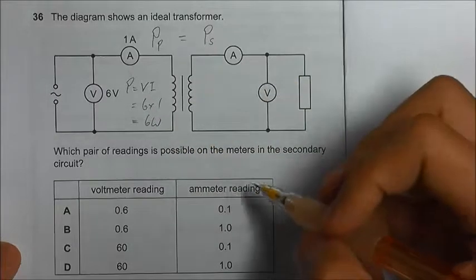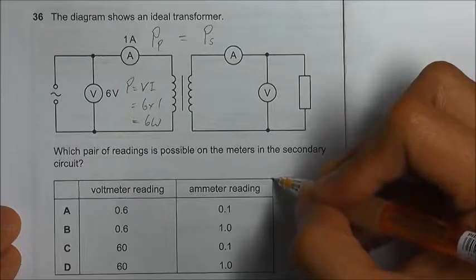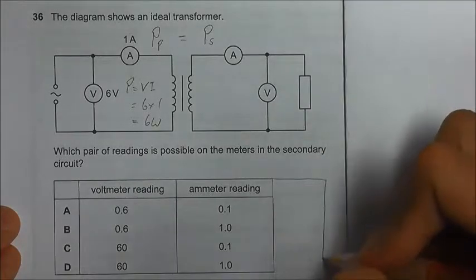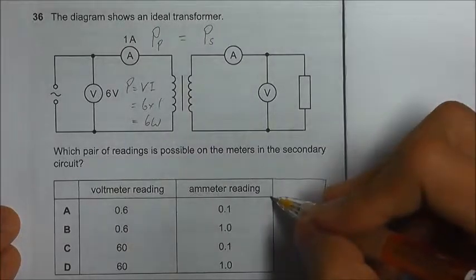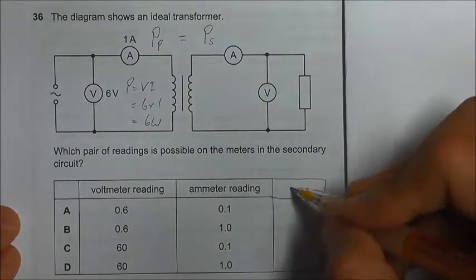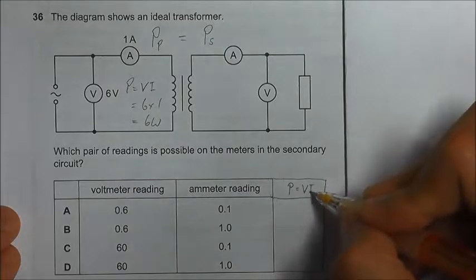So to find out which pair of reading is possible, we just need to extend one more column and calculate which pair of reading also gives a power of 6 watts.